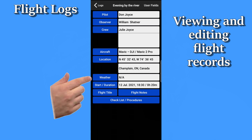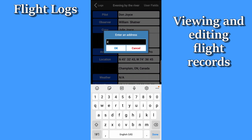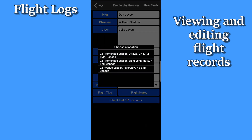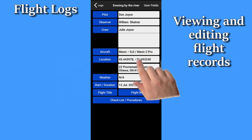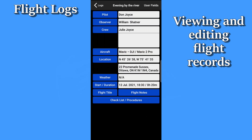Weather data can be viewed, but you can't edit it. You can always make weather comments or notes in your flight notes if you wish. Location data can be changed by entering a new street address, and the latitude-longitude will be calculated for you by the app. Did you know that you can change the lat-long format from GPS format to degrees minutes seconds just by tapping on the field? Pretty cool, eh?